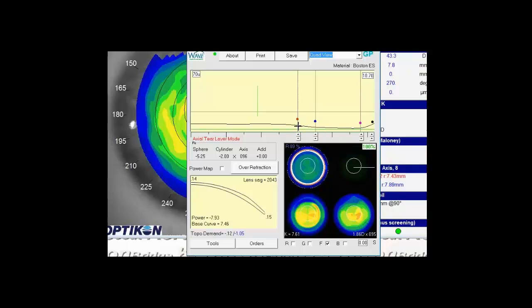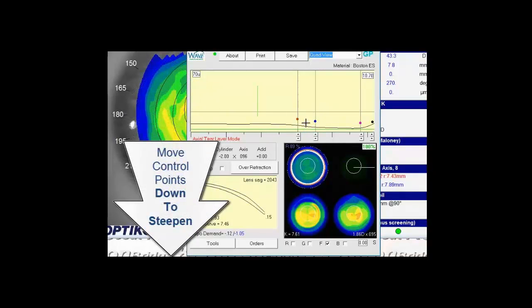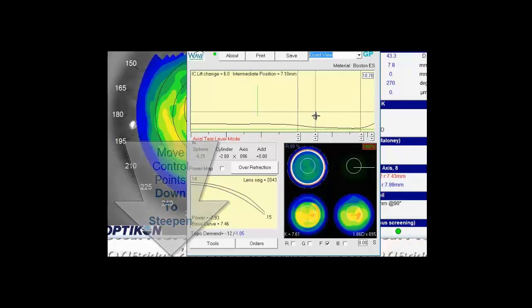If we wanted to steepen the central curve, we would just drag the red dot down. If we wanted to flatten it, we would drag it up. Same controls work on the blue dot. If we want to steepen the mid-peripheral curve, so that's going to steepen just to the left of the blue dot. We drag it down. If we want to flatten them, we can drag it up.